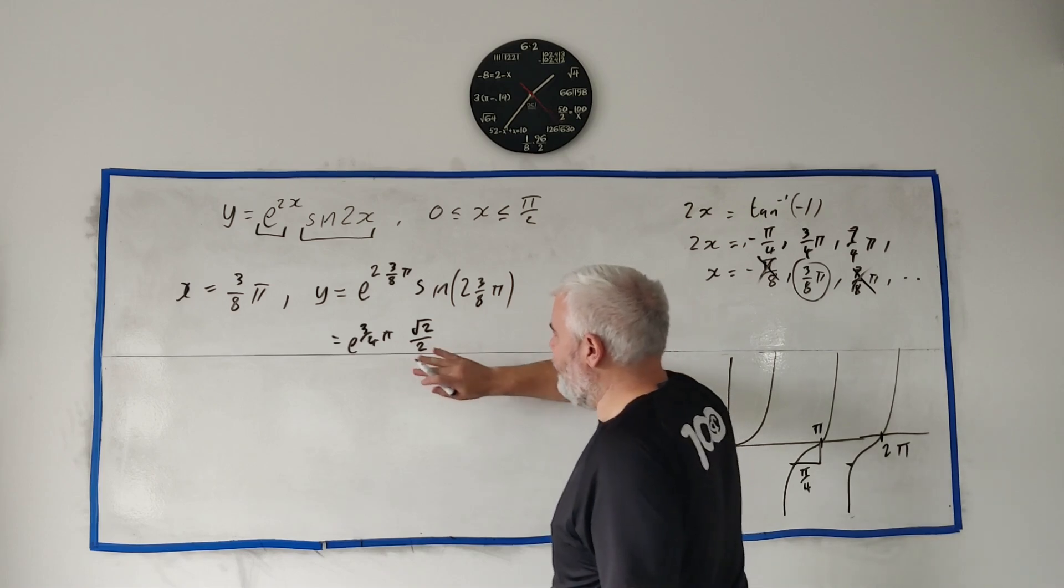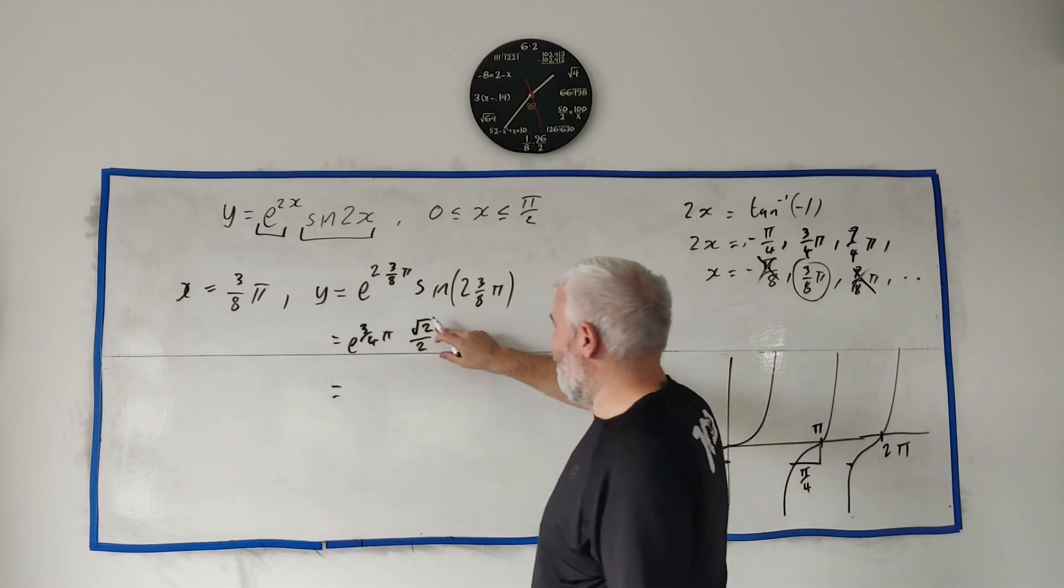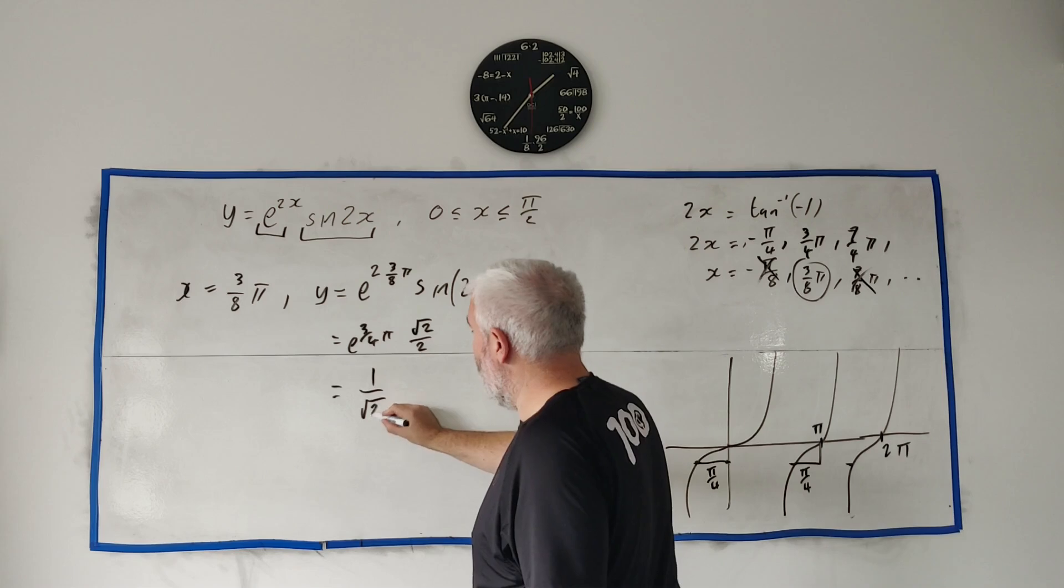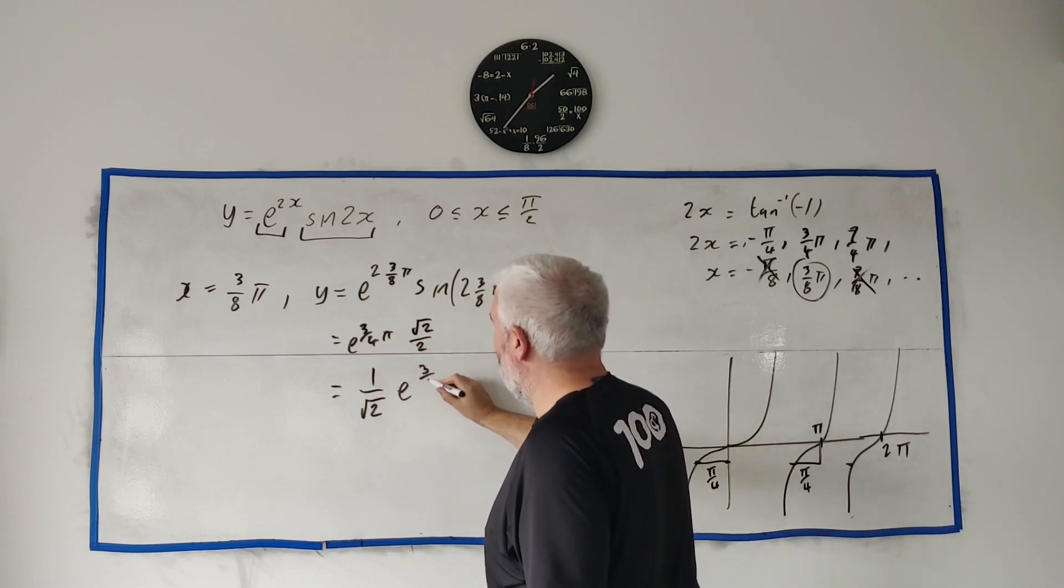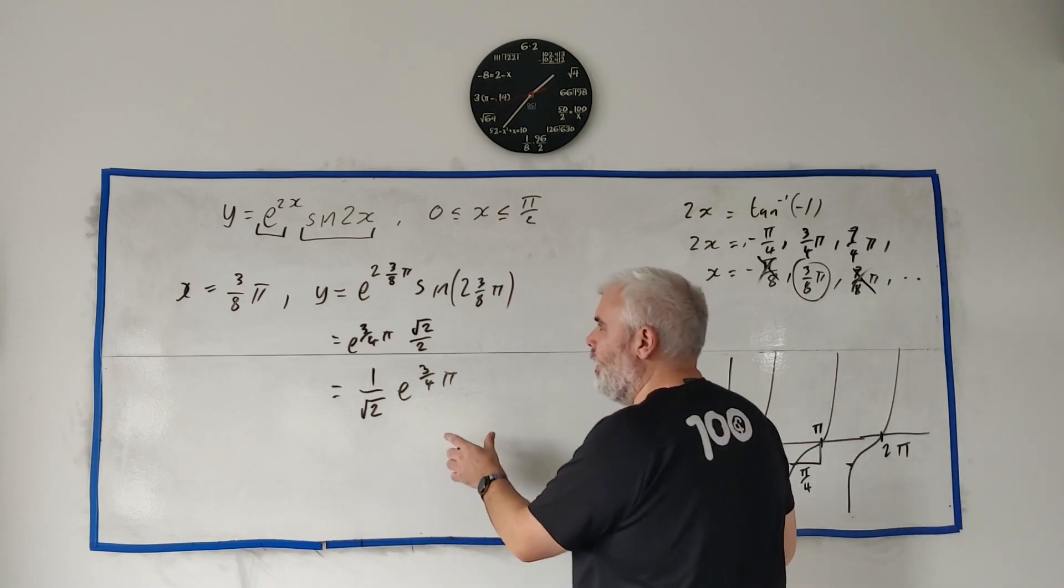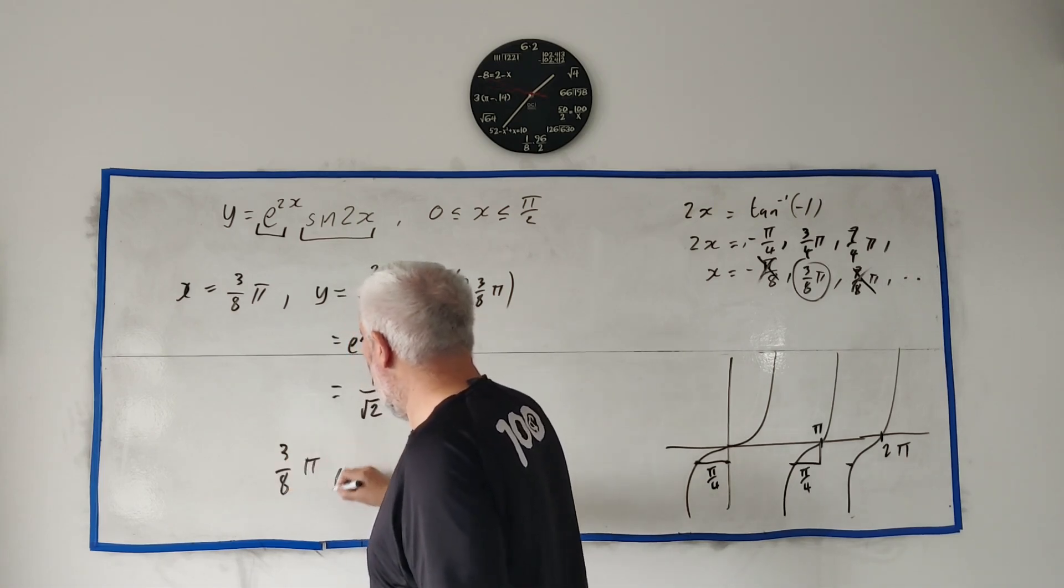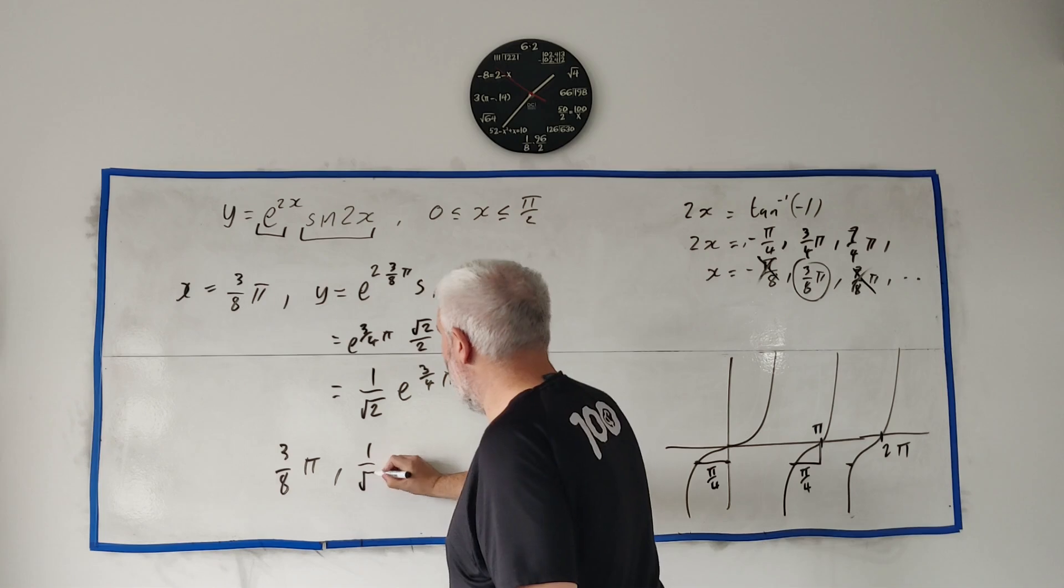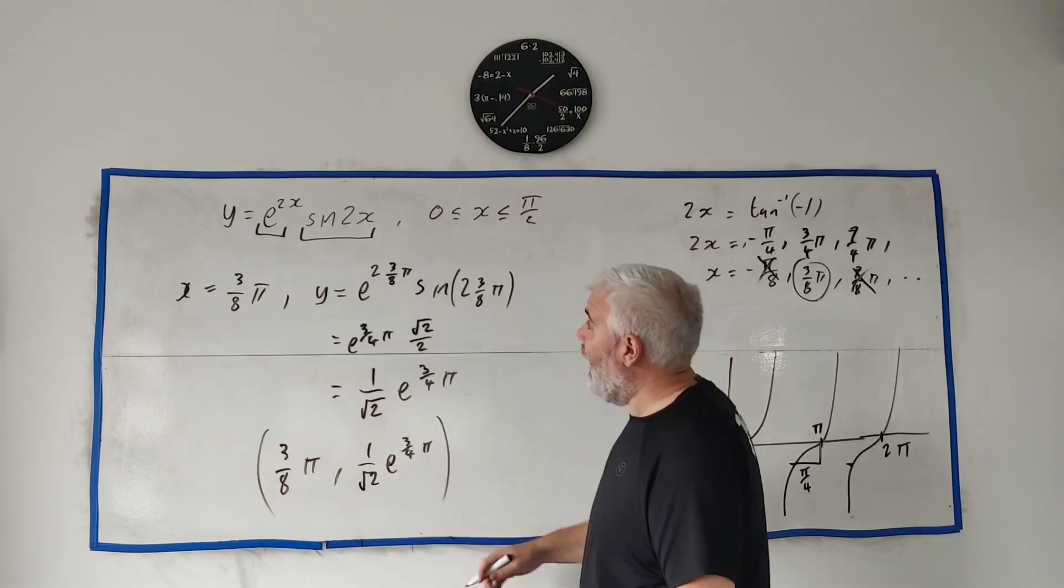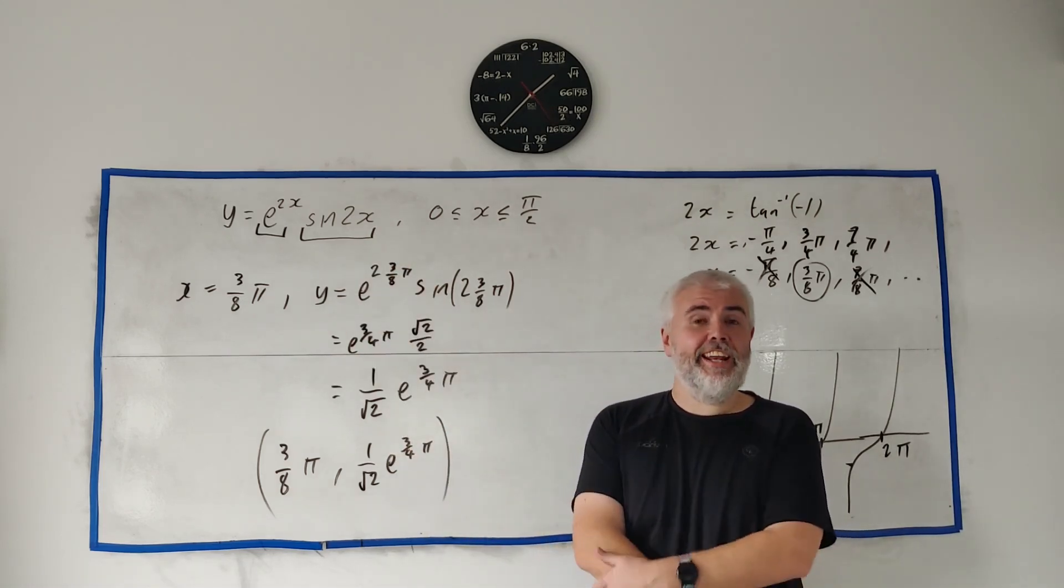And we get the square root of 2 over 2. I never really got why they write it this way, though. Remember, square root of 2 goes into this square root of 2 times. So you'll also see it written as 1 over square root of 2, and then e^(3π/4). Either way you want to write it, it's perfectly fine. But let's put them together into a coordinate form. So we just have 3π/8 and 1 over square root of 2 e^(3π/4). And that's the stationary point of this curve. Thank you for watching and have a great day.